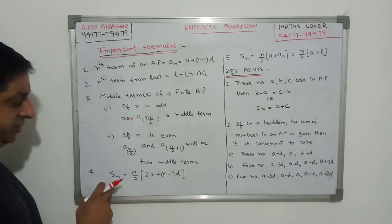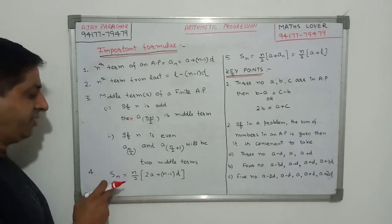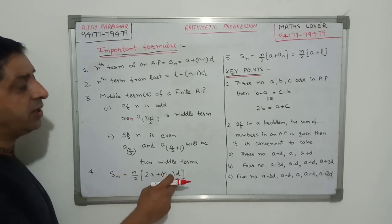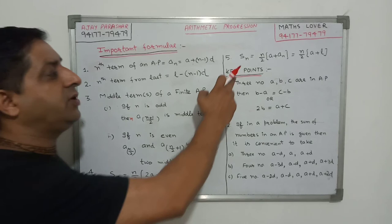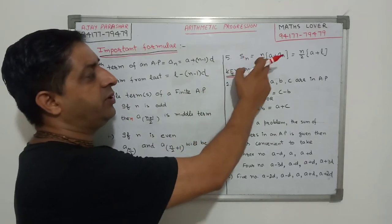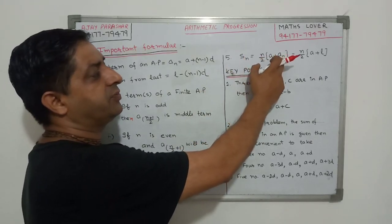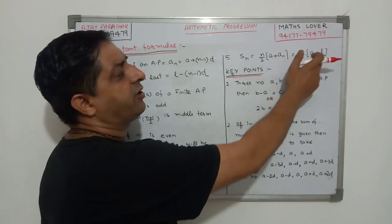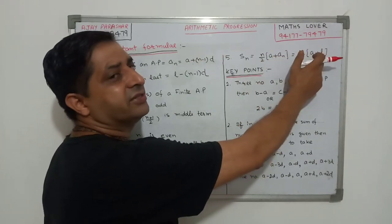Now to find the sum of terms of an AP, we apply two formulas. We have two formulas. The first formula is SN is N by 2 times 2A plus N minus 1 into D. And the second formula is SN is N by 2 times A plus AN where AN represents the nth term and N by 2 times A plus L. I have already explained you that AN and L is the same thing.